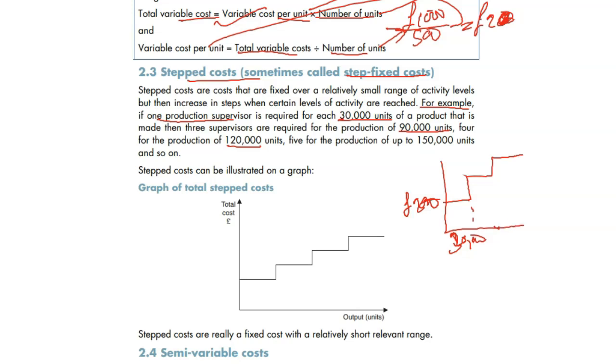But what if our requirement is 40,000 units now, or up to 60,000 units? We need another supervisor. Up to 60,000 units can be supervised by another supervisor. That's going to cost you 2,000 more. Altogether, it's going to cost you 4,000.